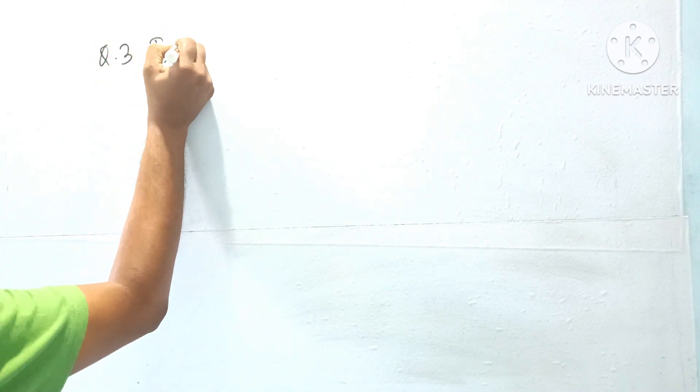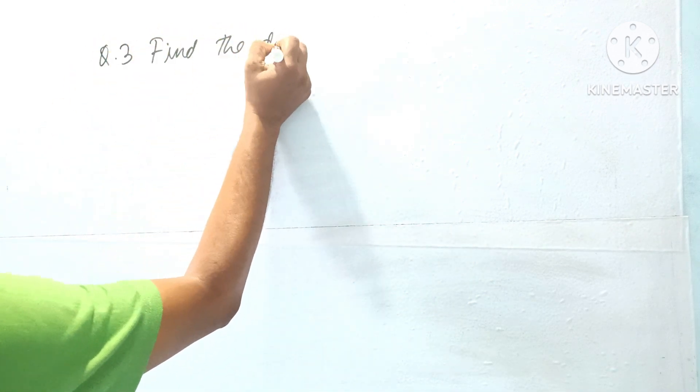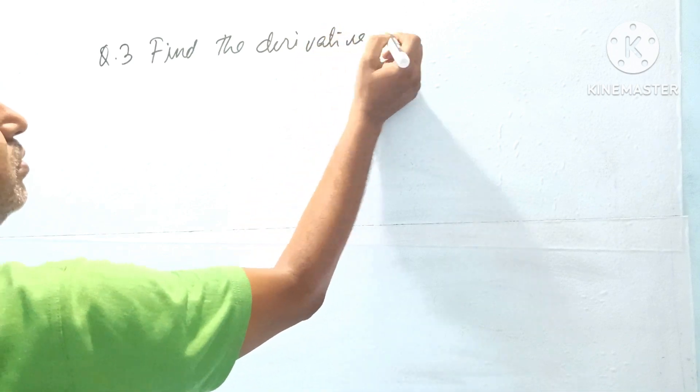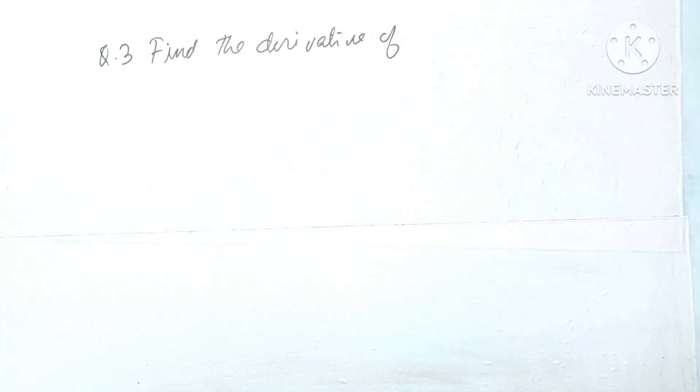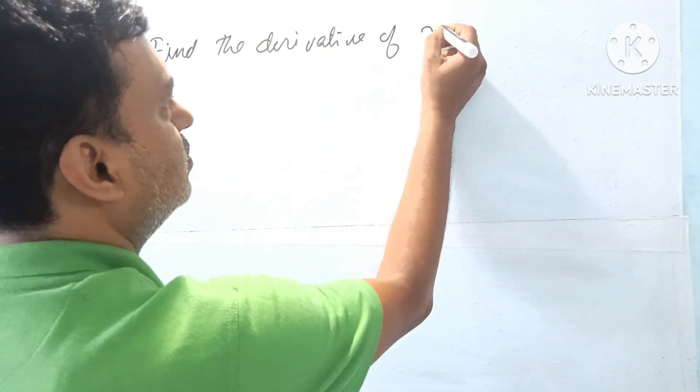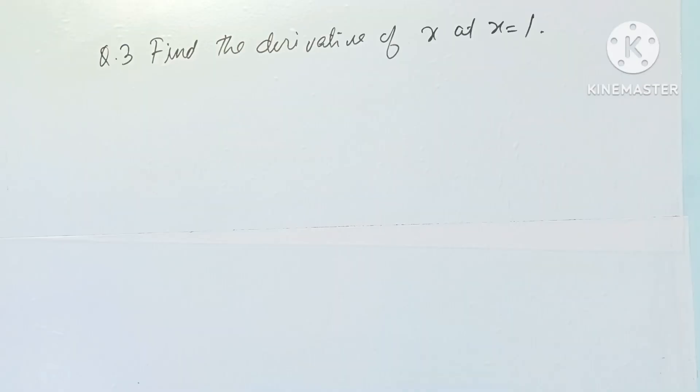Question number three: Find the derivative of x at x equal to 1. Solution: